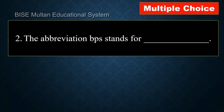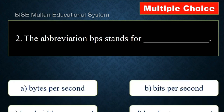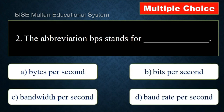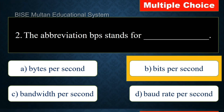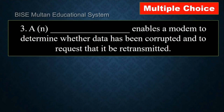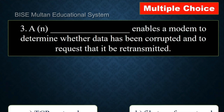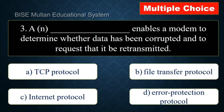Question number 2: The abbreviation Mbps stands for. The answer is bits per second. Question number 3: A dash enables a modem to determine whether data has been corrupted and will request that it be retransmitted.